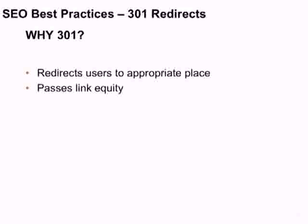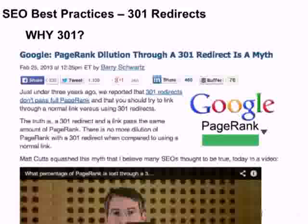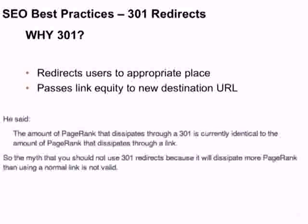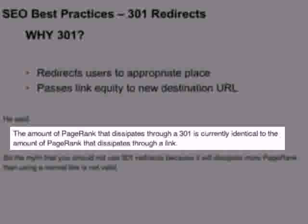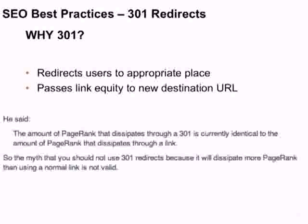If there are links inbound to that page, it passes some of that link equity. Barry Schwartz did a write-up addressing a video of Matt Cutts talking about 301 redirect link equity passing to the new URL — he squashed a myth that it might not pass all of that link equity. The 301 is the best way to pass link equity. He said the total amount that dissipates through a 301 is currently identical to the amount of page rank that dissipates through a link, meaning if you redirect a page, the equity will pass through to the new destination URL. If you're not using a 301 redirect, you're definitely not passing that link equity.